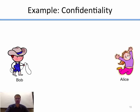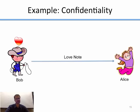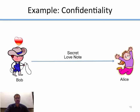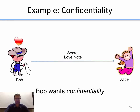Let's look at some examples. I have a son in kindergarten, so I thought of this example with Alice and Bob as two kindergarten kids. Bob really likes Alice and wants to send her a love note, but he knows his friends will make fun of him if they know. So he wants to send a secret love note that only Alice can read — if anyone else sees it, they won't know what it says. Bob wants confidentiality: he wants his message to Alice to be confidential so no one else can read it.